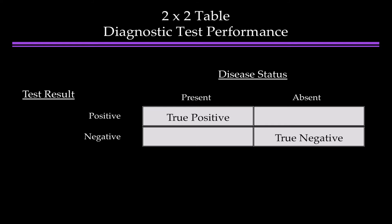That's the good diagonal. If the disease is absent but the patient has a positive test result, we call that a false positive. And conversely, if the disease is present and the patient has a negative test result, we call that a false negative. So that's all review.